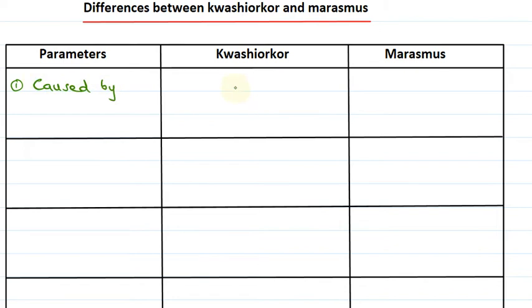Kwashiorkor is caused by the deficiency of proteins. Protein deficiency causes Kwashiorkor, hence this is a deficiency disease.